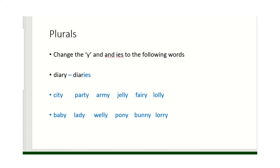Now these are plurals. We've done these before — the rule is we change the y to an i and add -es. So diary becomes diaries: we change the y and it becomes -ies. Are you able to do that for all of the other words?